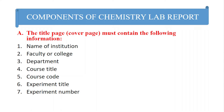The fourth item is the course title or course name, such as General Chemistry Laboratory, General Biology Laboratory, or Organic Chemistry Practical. Write the course title clearly. The fifth item is the course code — the code assigned to that course — written next to the course title. The sixth item is the experiment title; write specifically the title of your experiment.